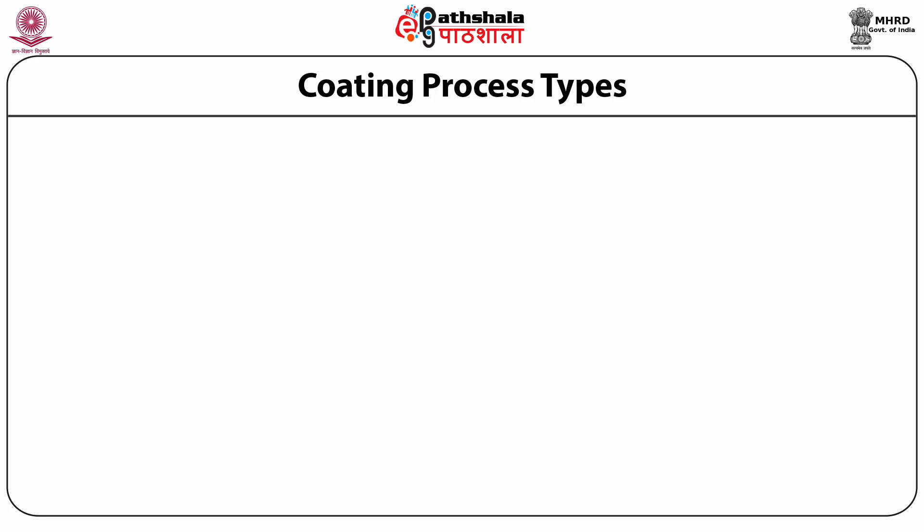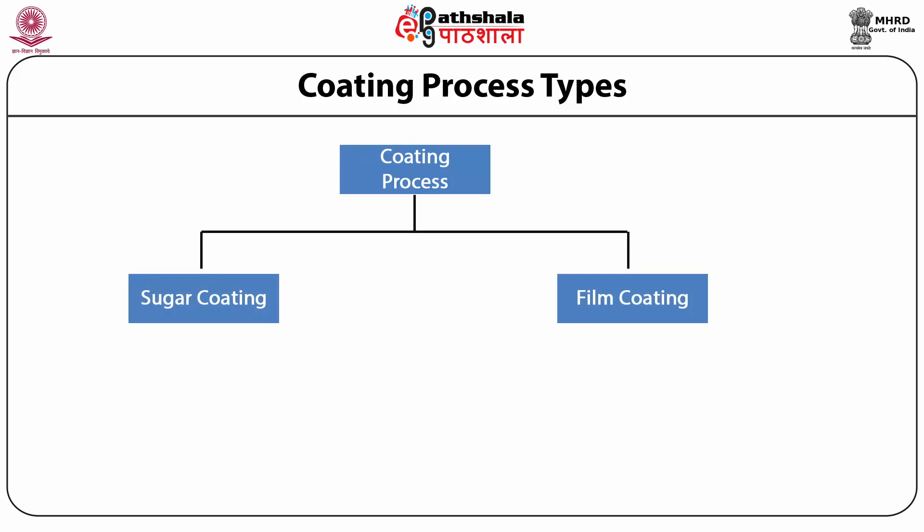Many types of specialized coating processes have been advocated to improve the coating process; however, the basic coating process can be divided into two types: sugar coating and film coating. Sugar coating is a multi-stage process involving several coatings of water-impermeable material, binder solution, sugar coating, and polishing. Coating of water-impermeable material, called seal coating, acts as a water barrier and prevents over-wetting.